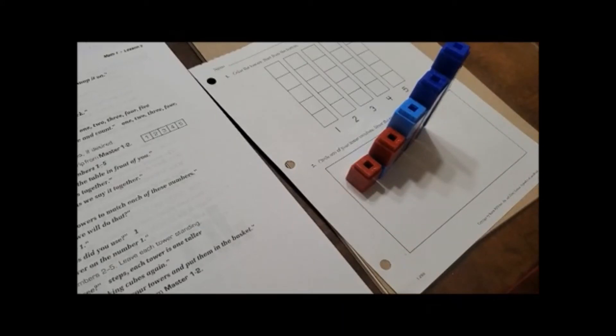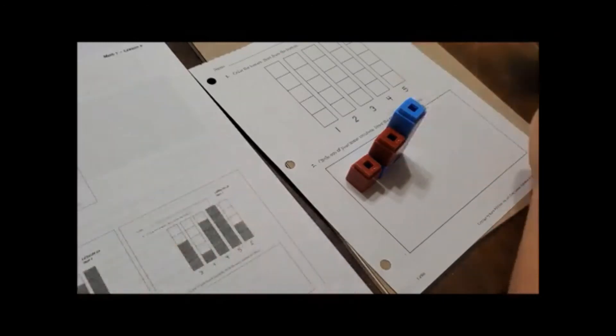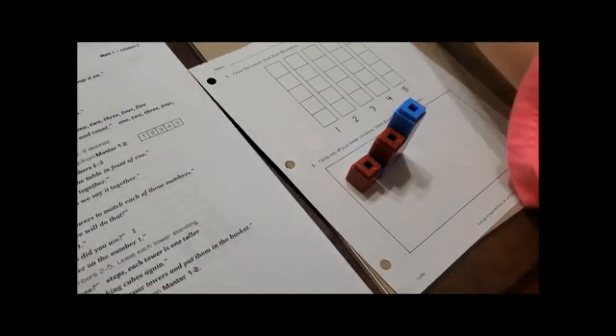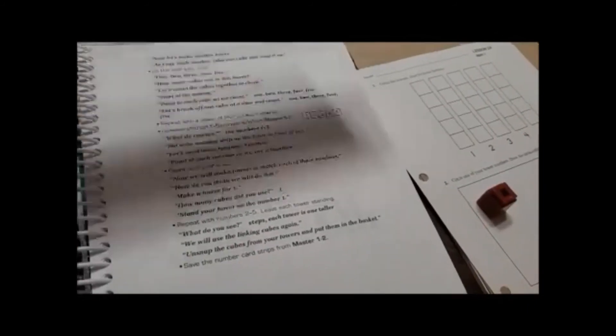So now can you unsnap them and put them all back over there? Five, four. Now it tells us that we're going to save our number card, which is this, so we'll put that back in our notebook.